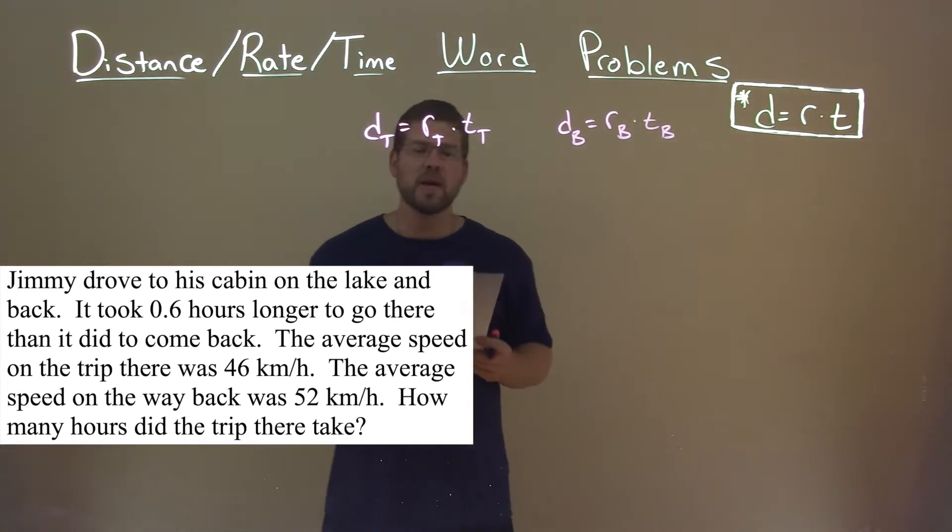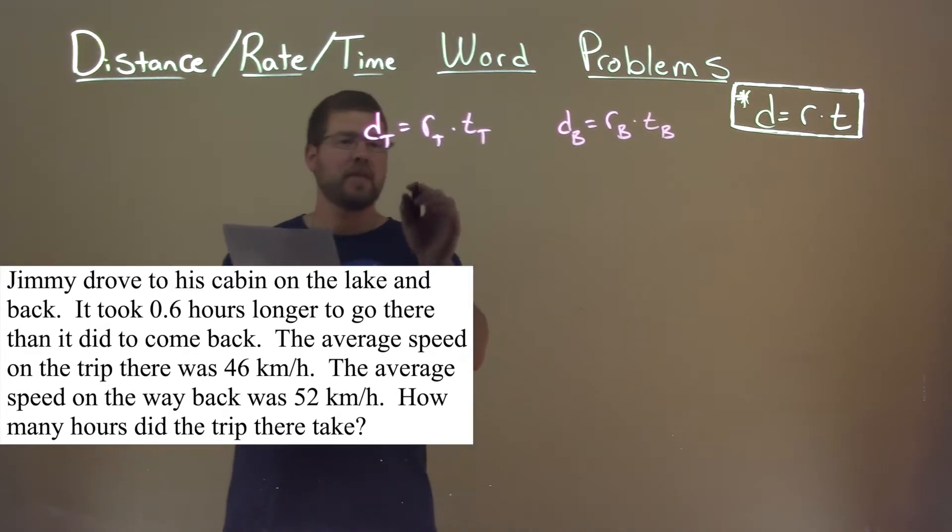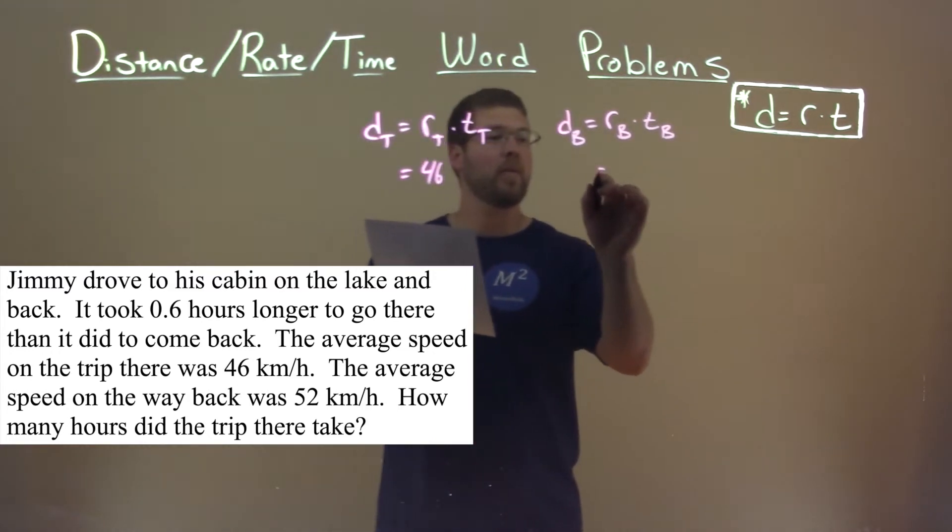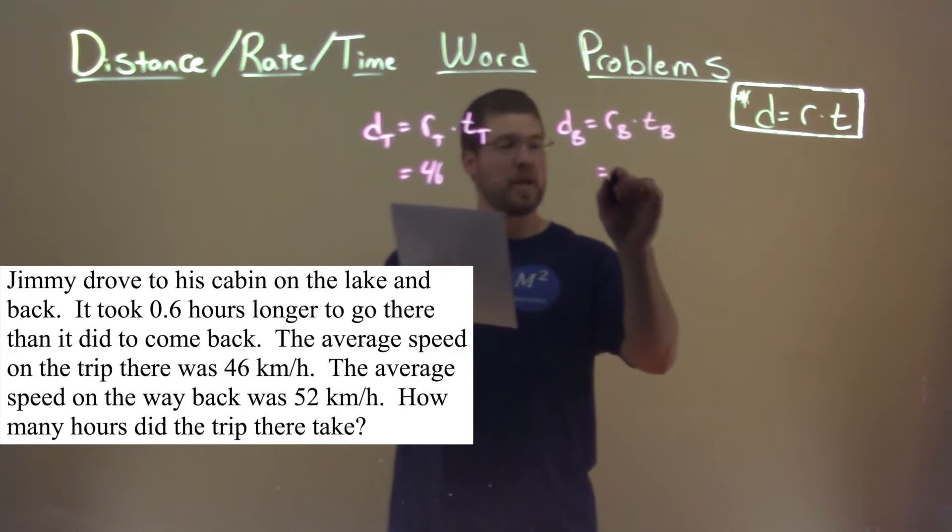Let's plug in what we know. They tell us here that the average speed there was 46 kilometers per hour, and the average speed on the way back was 52 kilometers per hour.